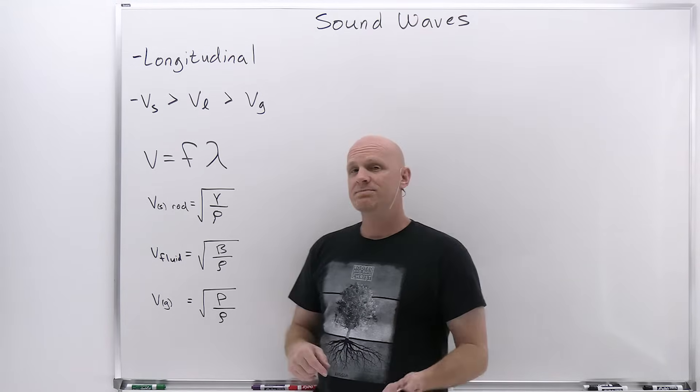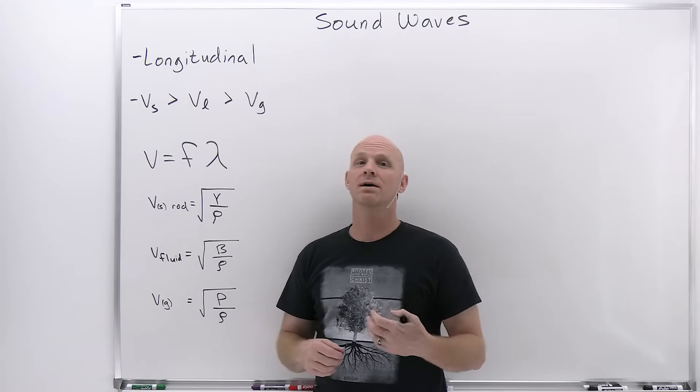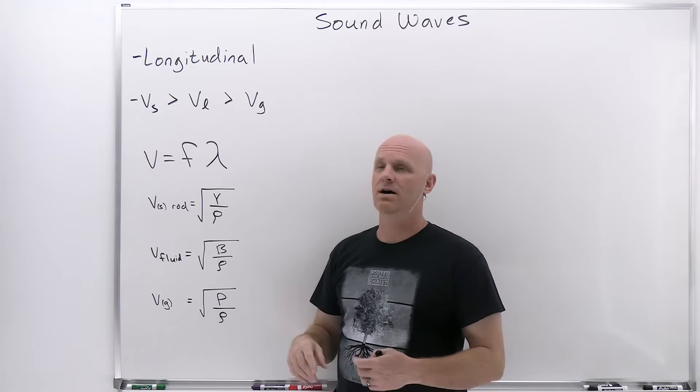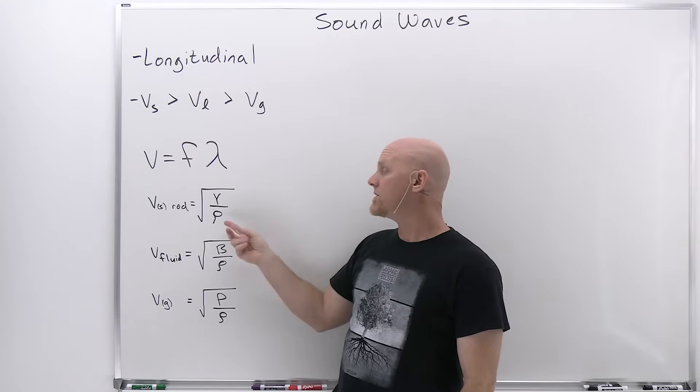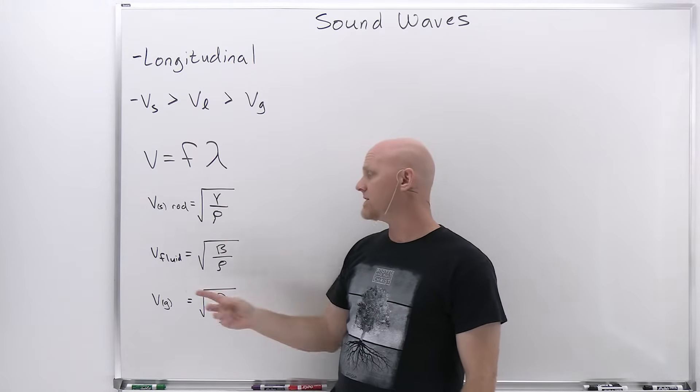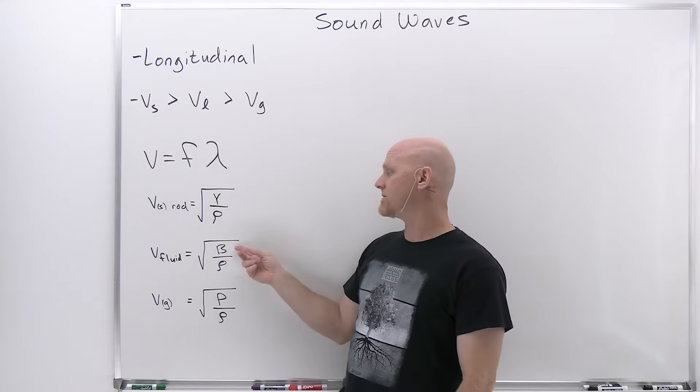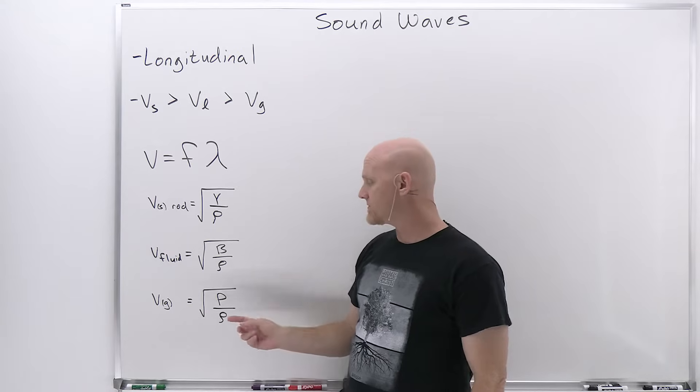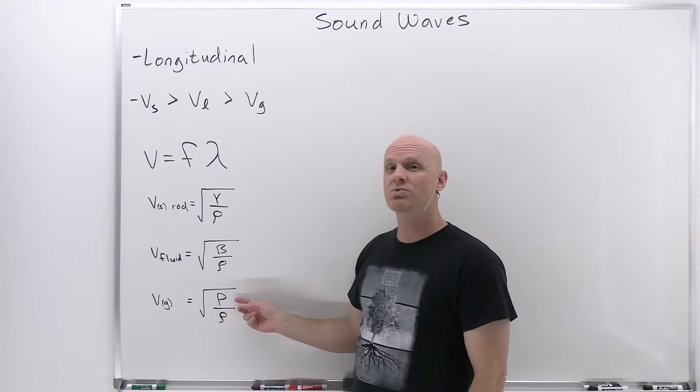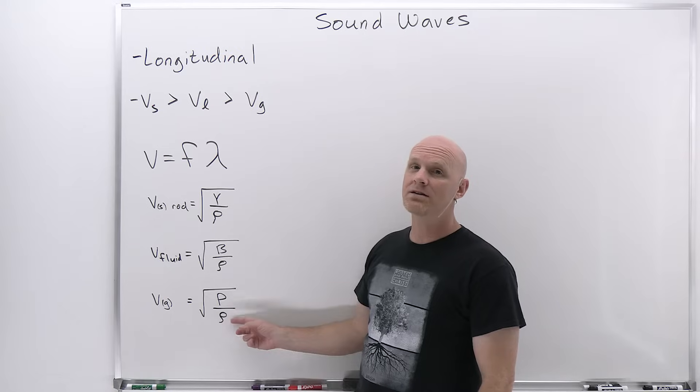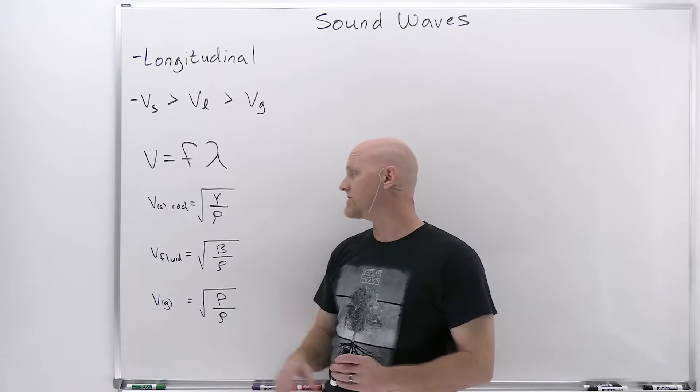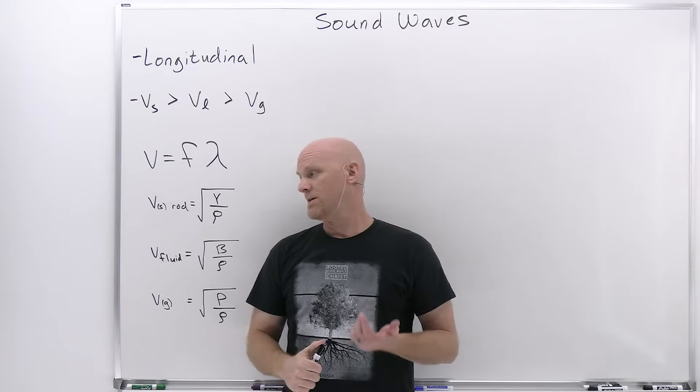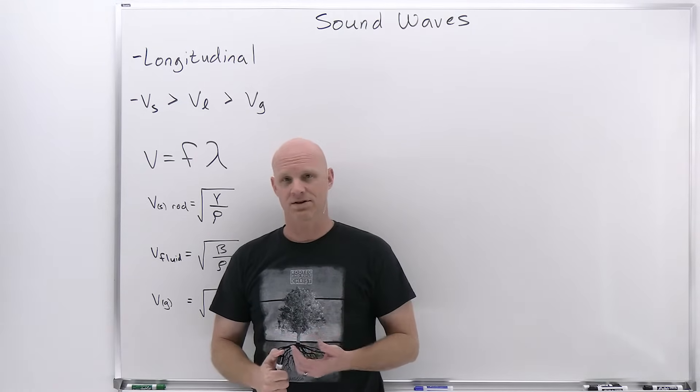But from here these end up just being some simple plug and chug relationships or some simple qualitative relationships that in a solid rod the velocity of sound is proportional to the square root of the Young's modulus or inversely proportional to the square root of the density. For the velocity of the fluid it's now directly proportional to the square root of the bulk modulus, again inversely to the square root of the density. And then for the gas now directly proportional to the square root of the pressure but still inversely to the square root of the density. So inverse relationship to the square root of the density in all three mediums. And again, you might be doing some simple plug and chug to go with this.